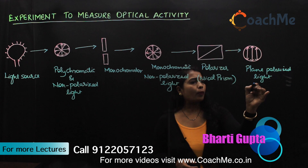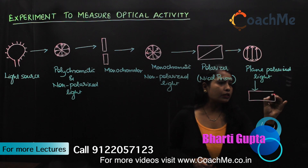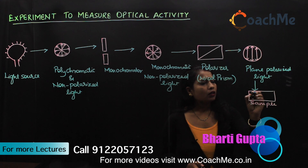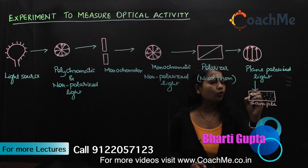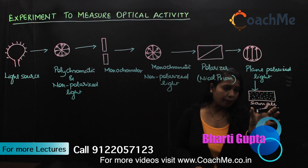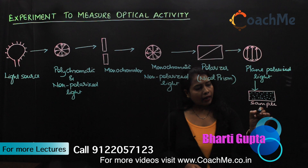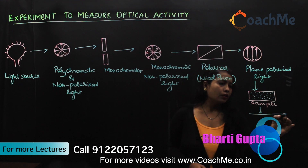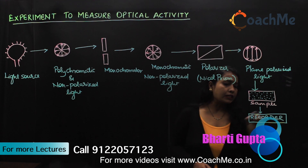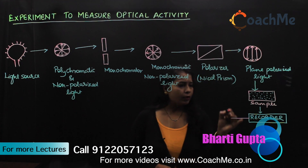This monochromatic plane polarized light is then passed through a sample chamber. In this sample chamber, we have the solution of the compound whose optical activity we are going to measure. The light passes through the sample, and after passing through the sample, there is a recorder where the reading will be recorded so we can see what happens to those light particles.